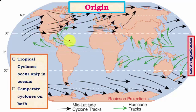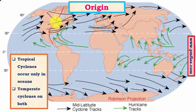Regarding origin, tropical cyclones have a thermal origin — they form mainly due to high solar insolation, with the sun's energy being the primary source. Temperate cyclones are dynamically induced, formed by the convergence of air masses. So the key factor in temperate cyclone formation is the dynamic movement of air masses, whereas temperature is the dominant factor for tropical cyclones.